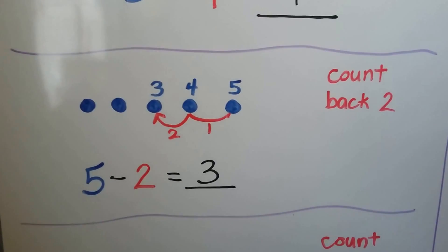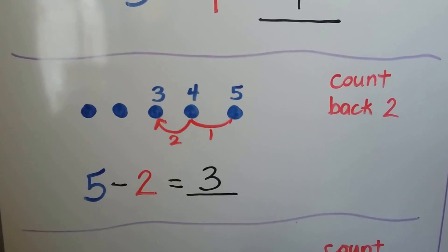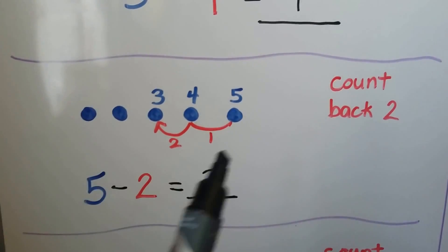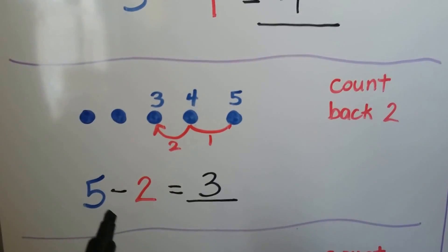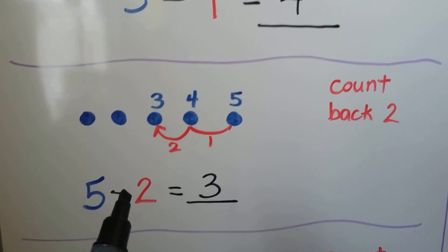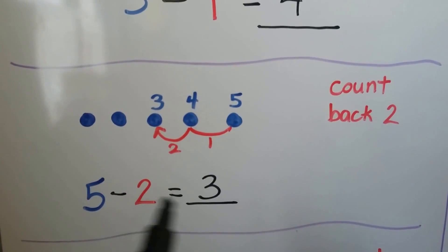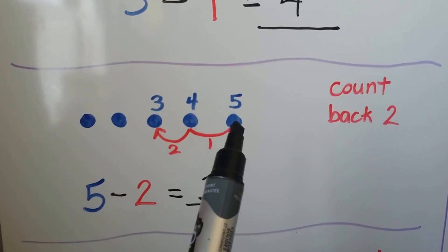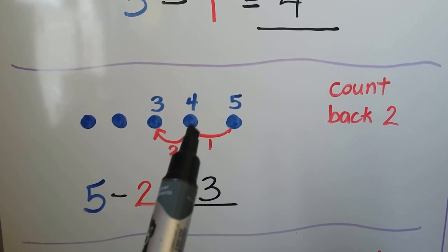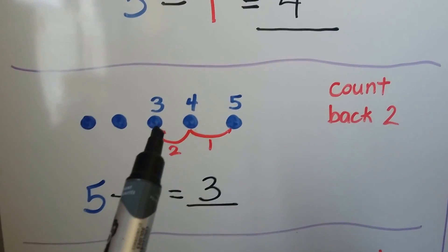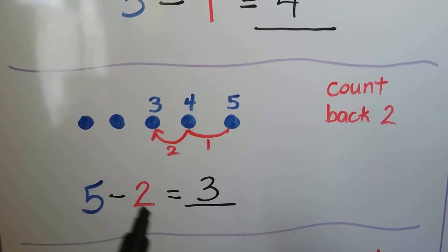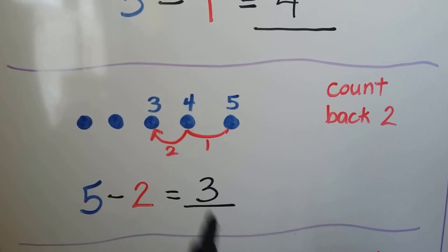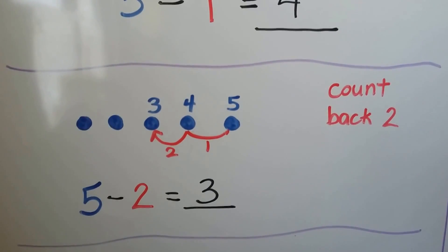We can count back 2. We have five counters. 5 minus 2. We count back 2: 1, 2. That brings us to 3. 5 minus 2 is equal to 3.